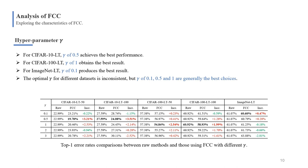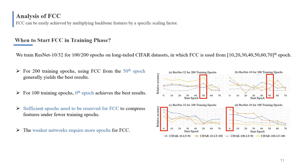For exploring the parameter, we set a series of γ on five datasets. The optimal γ for different datasets is inconsistent, but γ of 0.1, 0.5, and 1 are generally best choices.